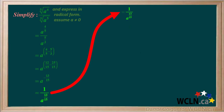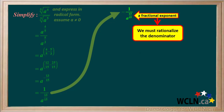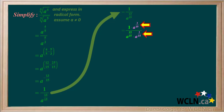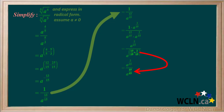We'll continue our solution up here. We have a fractional exponent in the denominator, so we must rationalize the denominator to get rid of this fractional exponent. We do this by multiplying both the numerator and the denominator by a to the two-fifteenths. We can remove the one from the numerator, and looking at the denominator, a to the thirteen-fifteenths times a to the two-fifteenths equals a to the fifteen-fifteenths, which is equal to just a.